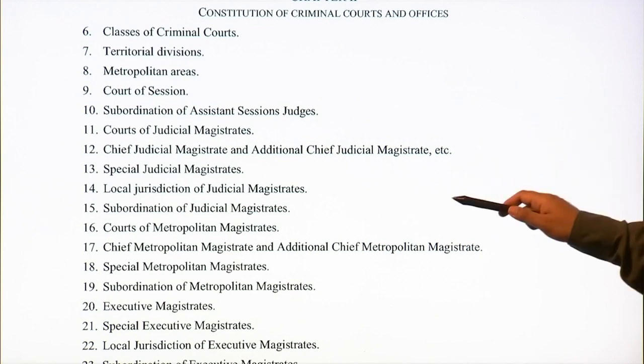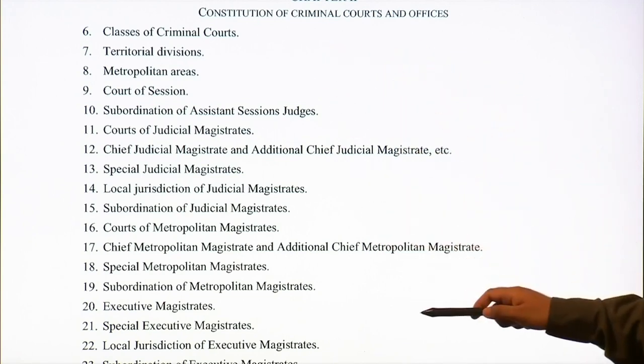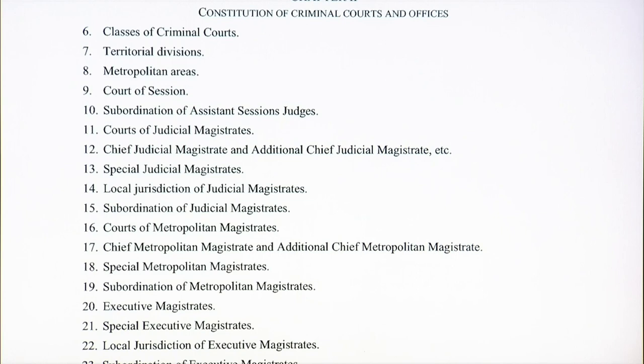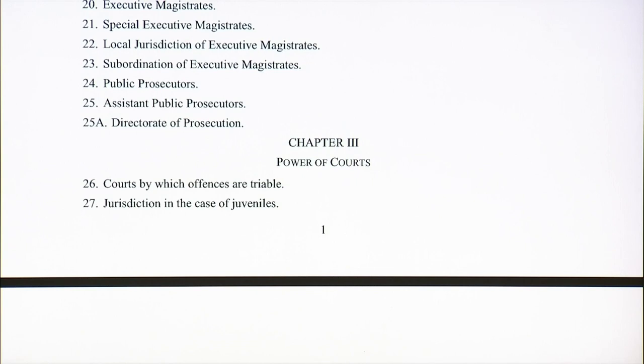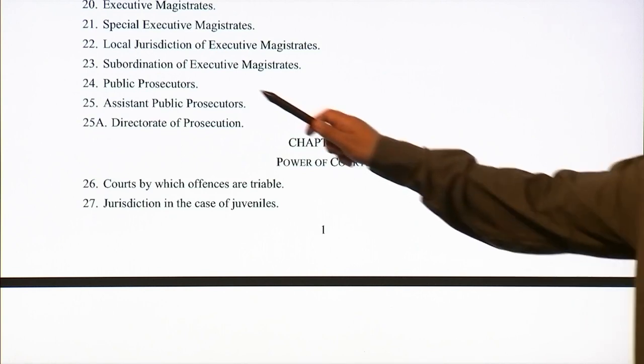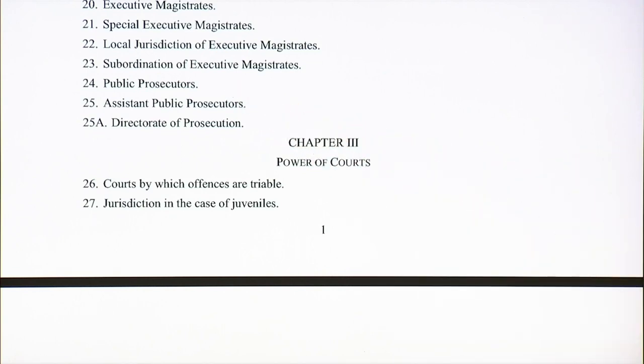Chapter 2 defines different courts and establishes their hierarchy. It then covers Executive Magistrates — people like the DM, SDM, or Tehsildar who are Executive Magistrates of an area — along with Special Executive Magistrates, their local jurisdiction, and subordination. It also defines who is going to be a Public Prosecutor. In a criminal proceeding, the government's or society's side is put up by the Public Prosecutor and the other side is known as the Defence. It also covers Assistant Public Prosecutor and the Directorate of Prosecution.